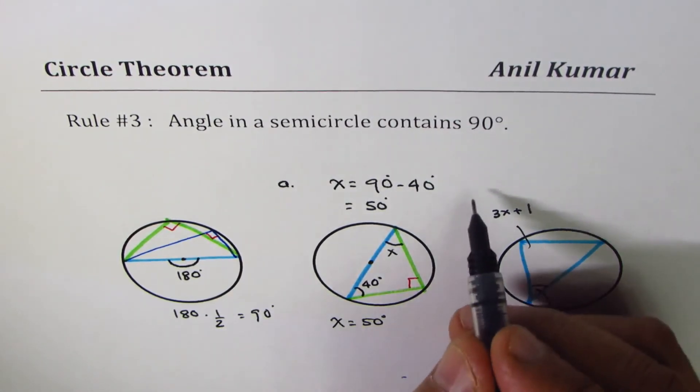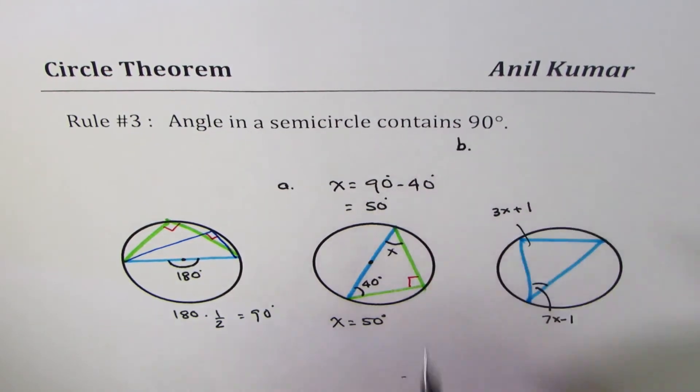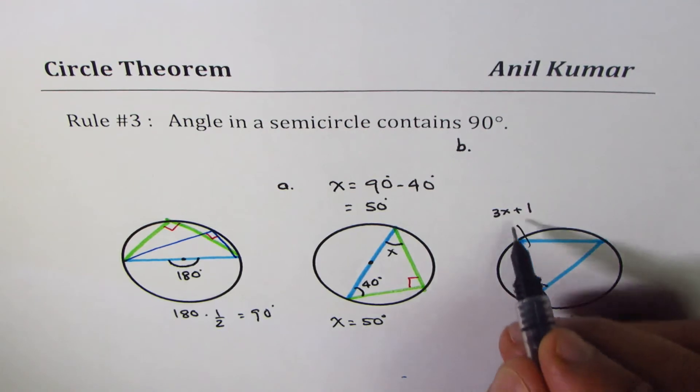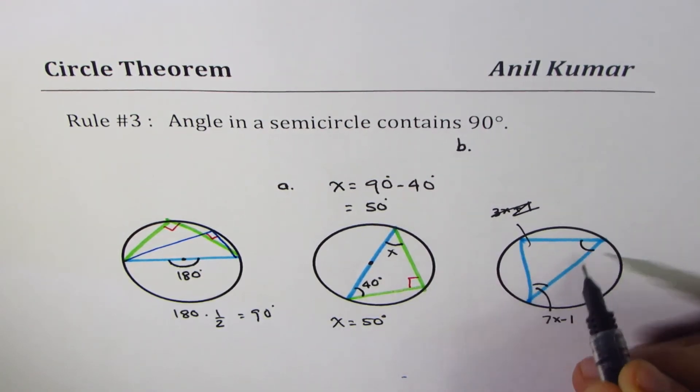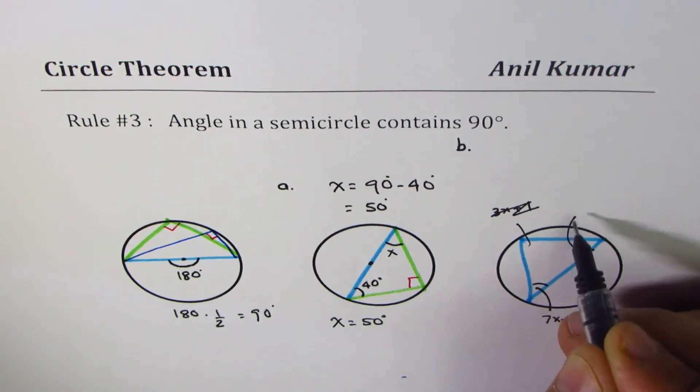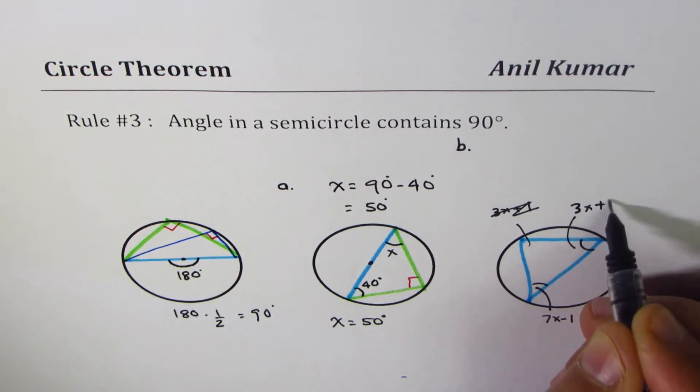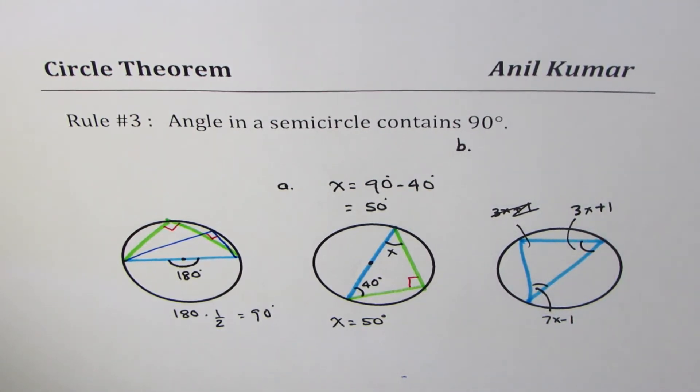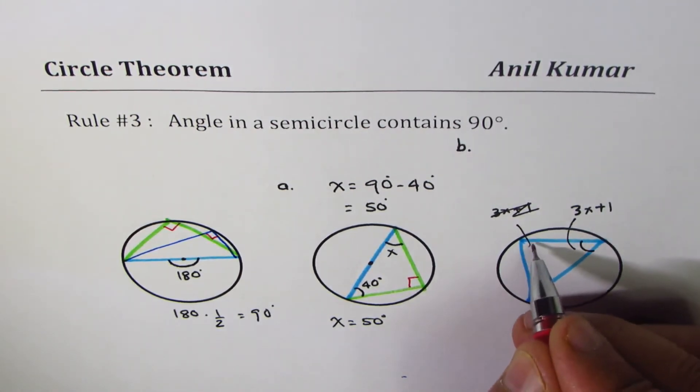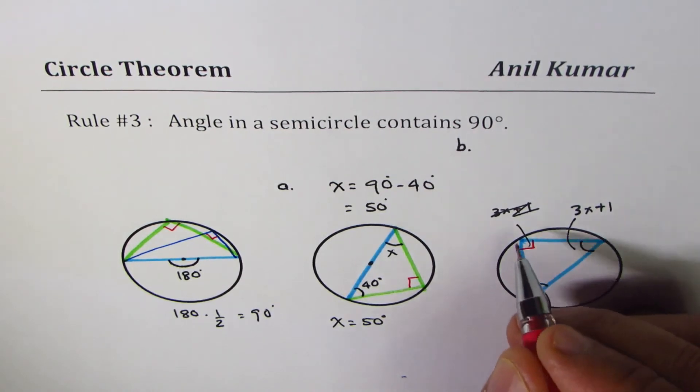Now let's do the next question, part b. Here we know that this angle should be 3x plus 1. The other angle, because that's the diagonal, this angle is 90 degrees.